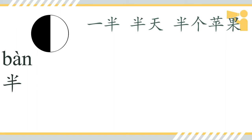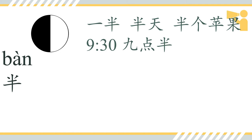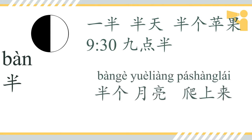半 works well with time too. For example, 九点半 means 'half past nine'. And in this song we have 半个月亮爬上来 — 半 meaning 'half'.